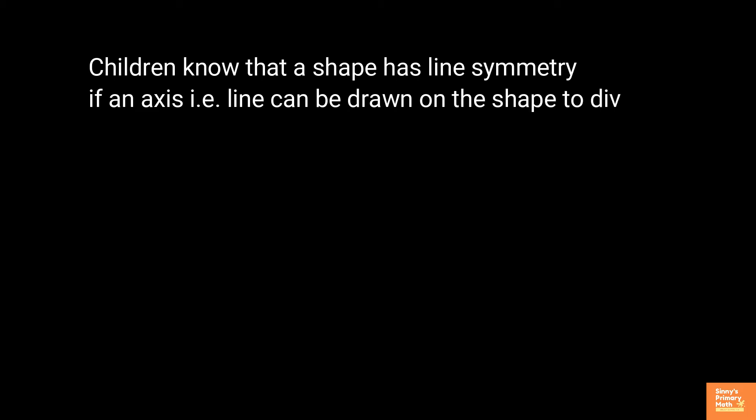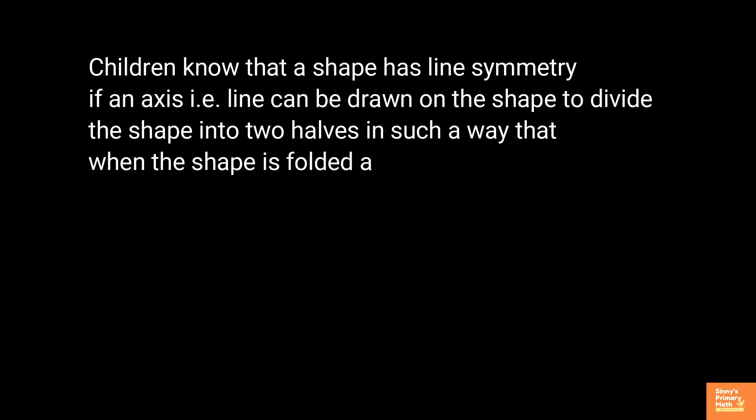Children know that a shape has line symmetry if an axis, that is, line can be drawn on the shape to divide the shape into two halves in such a way that when the shape is folded along that line, the two halves match up. However, children may experience difficulty.